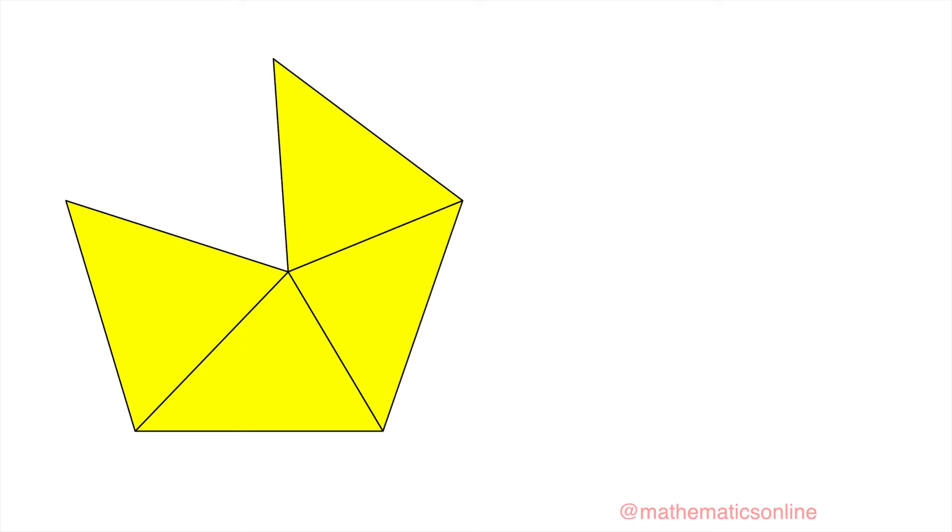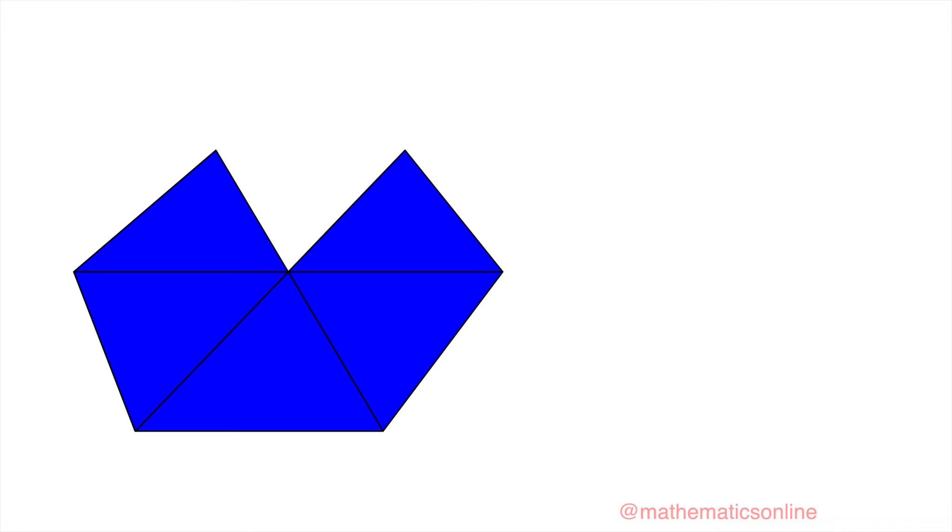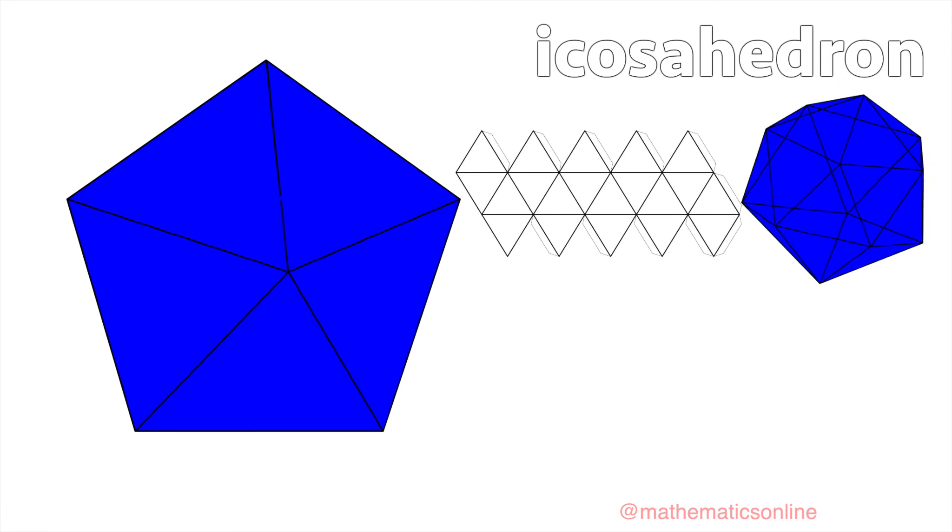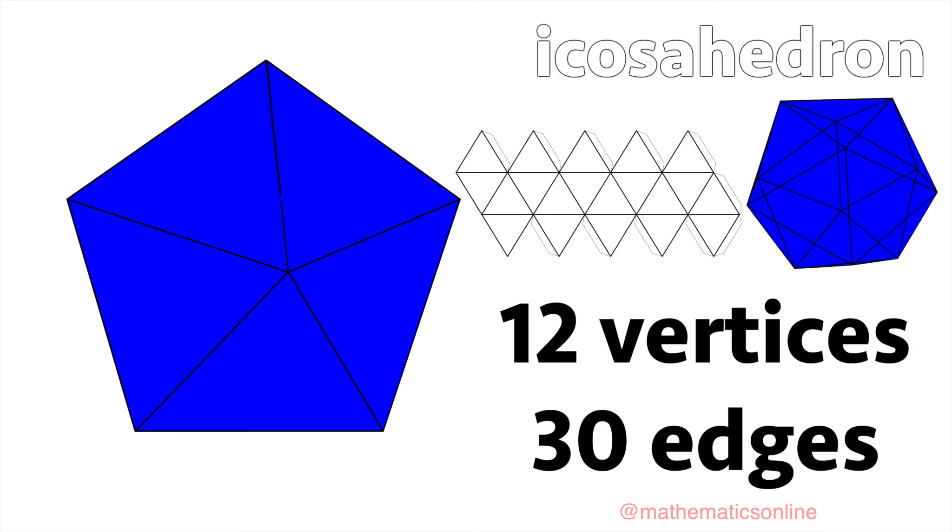So far, we have created two of the Platonic solids with triangles. Can we create another if we add a fifth triangle? Notice that the gap is getting smaller. This is the icosahedron. The icosahedron consists of a total of twenty triangle faces. It has twelve vertices and thirty edges.